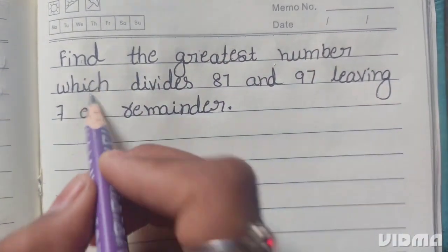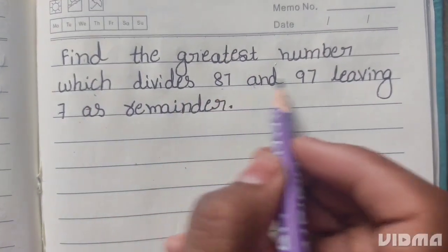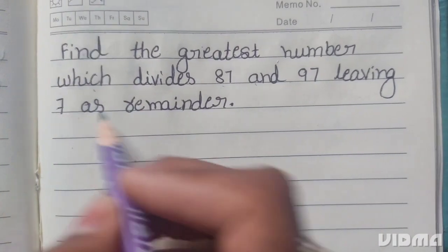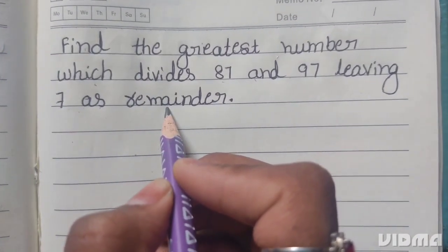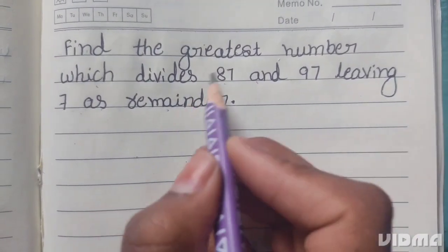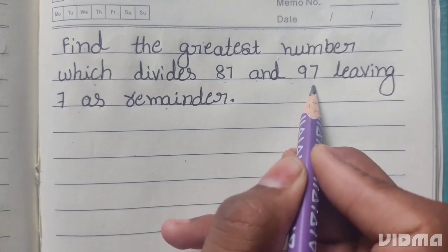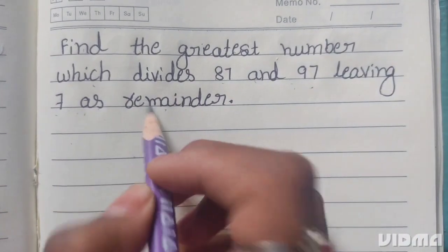Find the greatest number which divides 87 and 97, leaving 7 as remainder. The required number divides 87 and 97, leaving 7 as remainder.